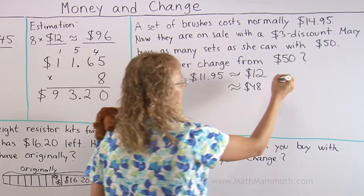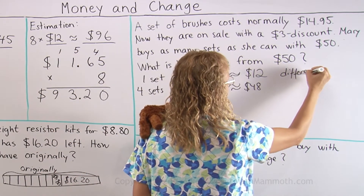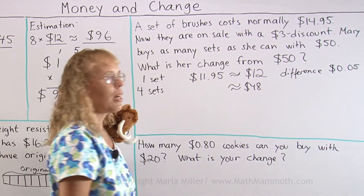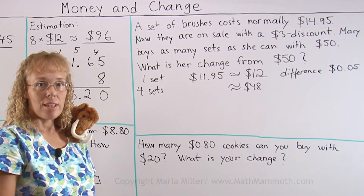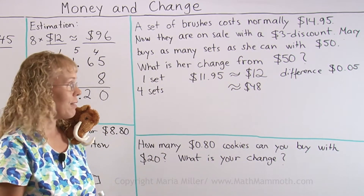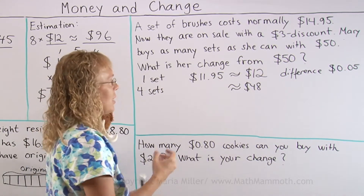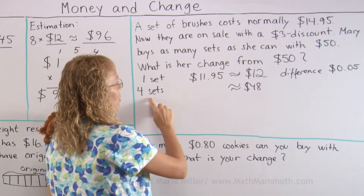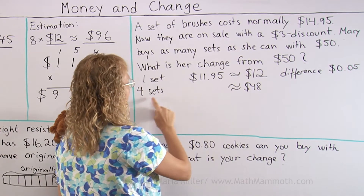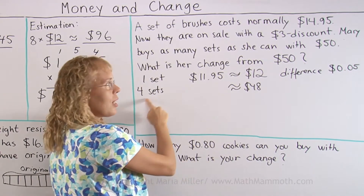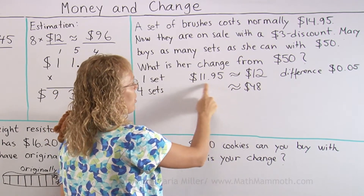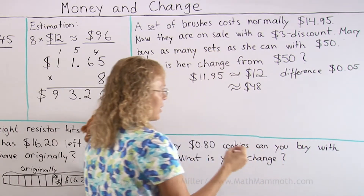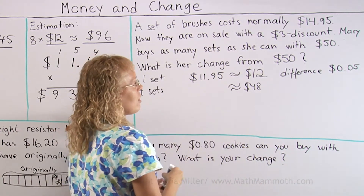The difference is just $0.05. So when we multiply by four, the difference will be four times five cents — that's the error of our estimation. When I multiply four times $12, I get $48. And if I multiply four times $11.95, the result would be four times that five cents less than $48.